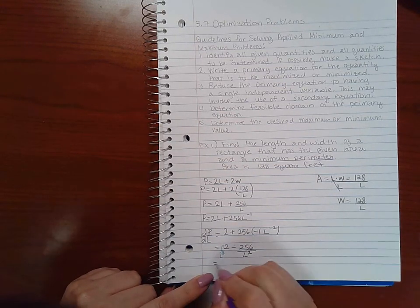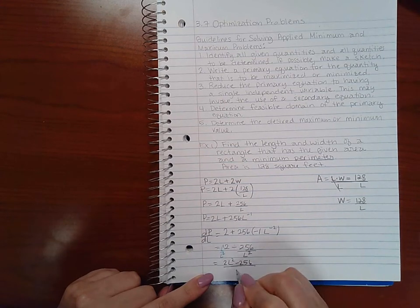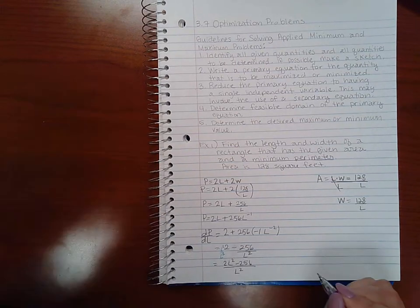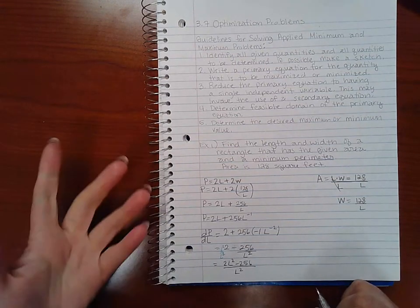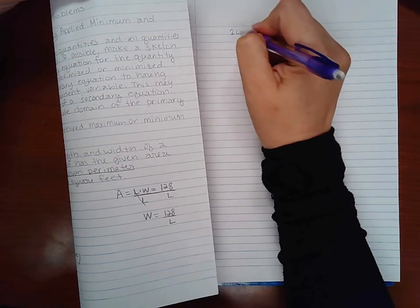If I try to get a common denominator, I will have 2L squared minus 256 over L squared. Now if I get the critical numbers from this, I can set my numerator equal to zero. Oh good, I do have paper over here. So my numerator equal to zero and my denominator equal to zero should give me my critical numbers.